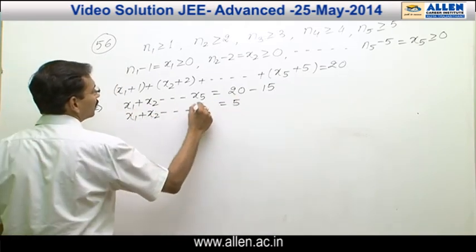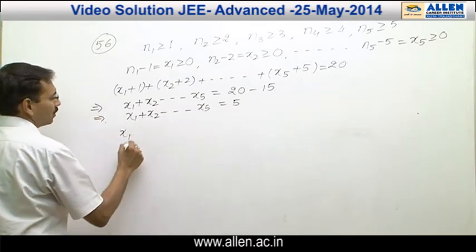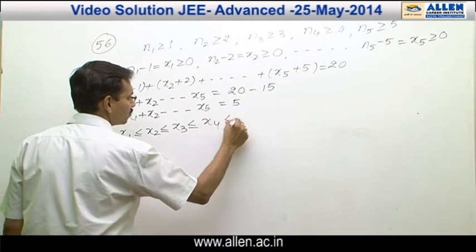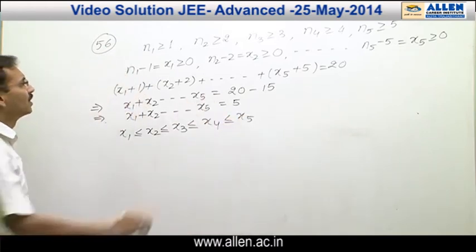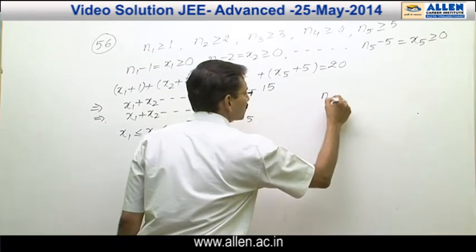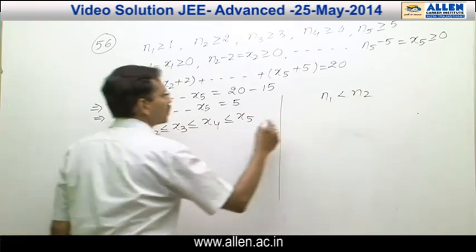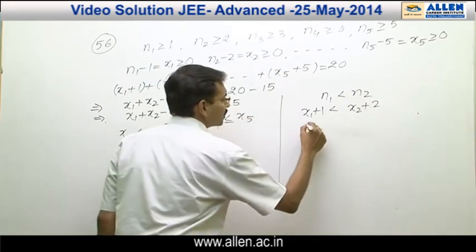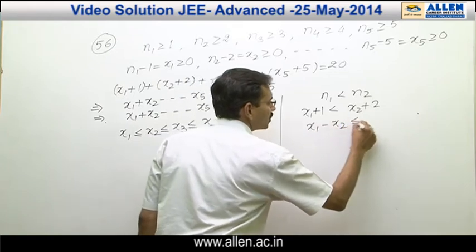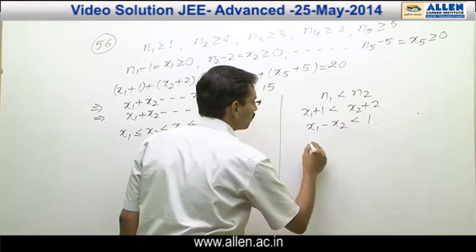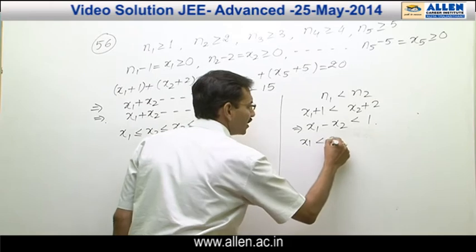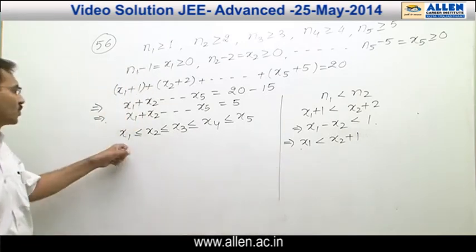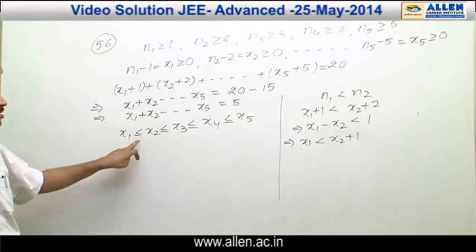The new constraint is x1 less than or equal to x2 less than or equal to x3 less than or equal to x4 less than or equal to x5. This is derived from the original condition n1 less than n2: since x1 plus 1 is less than x2 plus 2, we get x1 minus x2 less than 1, which means x1 is less than x2 plus 1, so x1 is either less than x2 or equal to x2.